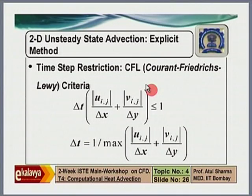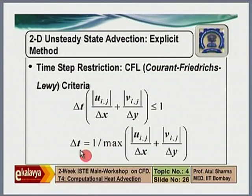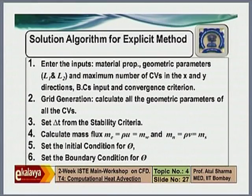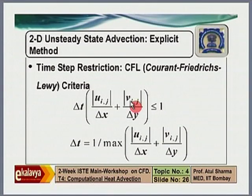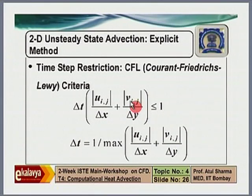In the explicit approach, this is the stability criterion — the equation we use to calculate the maximum delta t we can use. If we use a time step greater than this, the solution diverges toward infinity. This stability criterion exists for pure conduction and pure advection problems, but we do not have a single expression for the combination — the convective heat transfer problem — nor for the Navier-Stokes equations. However, we use this condition as a guideline to calculate the time step when using an explicit method to solve the Navier-Stokes equations.